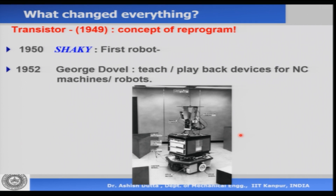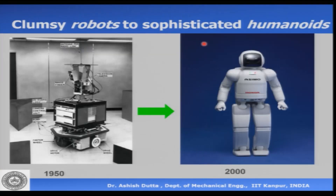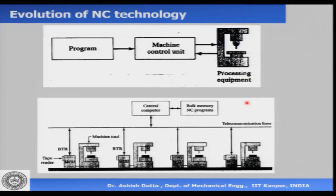What caused these changes? Since 1948-49, computer technology became more and more powerful. In earlier days, we had one program controlling one machine control unit — one computer controlling one machine, whether an NC machine or a robot. As computers got more powerful, we could have one computer controlling many machines, with a number of programs controlling one central computer which controlled several machines. So we had NC, then CNC.